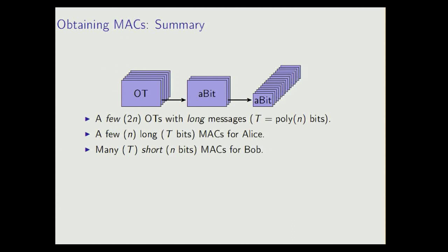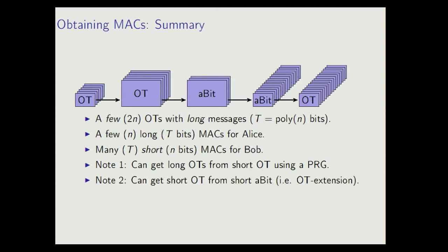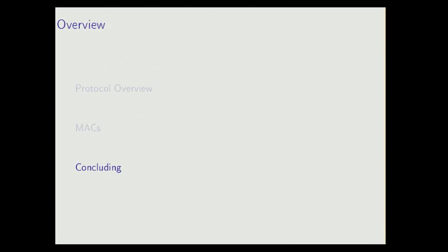What I would like to note here is that actually the initial OTs with long messages, these we can implement using OTs with short messages, if we only have a pseudo random generator. And at the other end of the chain here, we can take these authenticated bits and then we can use those to implement OTs with short messages, just using a hash function or something like this for every OT that we want. So if we look at the whole chain, we get this OT extension technique that I told you about in the beginning.